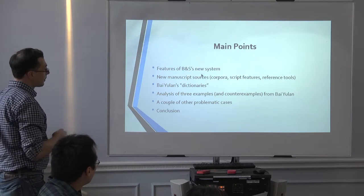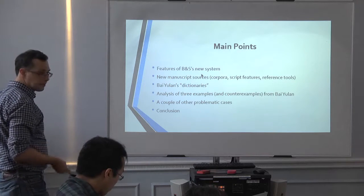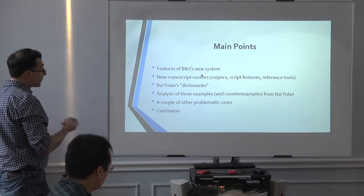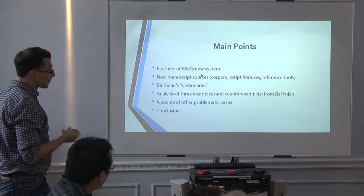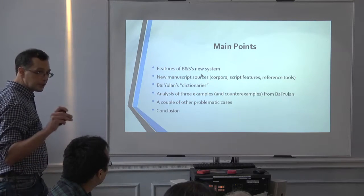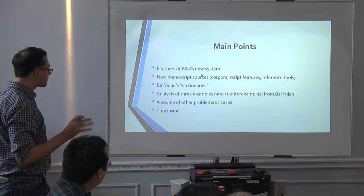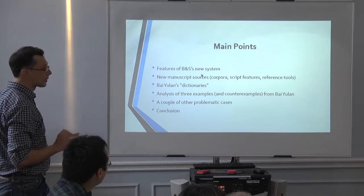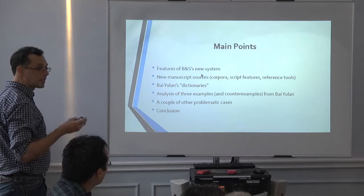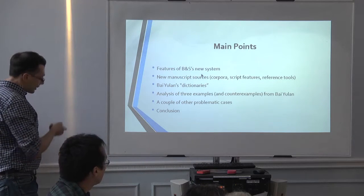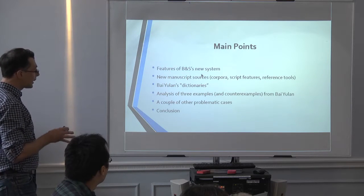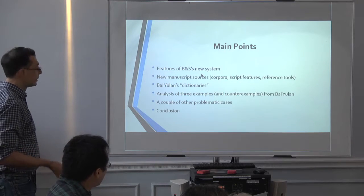So mainly I deal with these points in a sequence. What I believe are the main features of the book, of the new system. How they deal with new manuscript sources, but especially how scholars approach these sources, what are the common tools they use, what are the common problems met by scholars. Then I will focus specifically on the usage of the Dictionary, Baiyu Lan, as a way to test some hypotheses and to see some counter examples in the spirit very explicit in the book of falsifiability. I mean really making claims that can be tested one way or another.